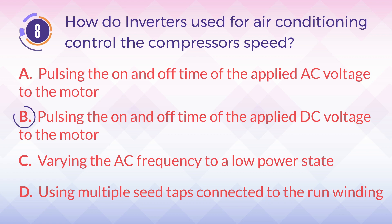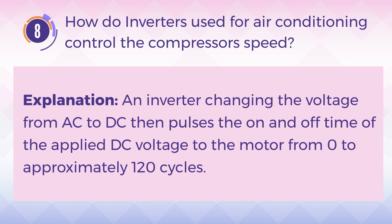The answer is B. Pulsing the on and off time of the applied DC voltage to the motor. Explanation: An inverter changes the voltage from AC to DC, then pulses the on and off time of the applied DC voltage to the motor from 0 to approximately 120 cycles.